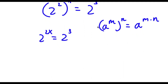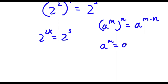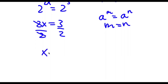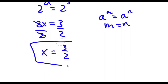Now if a to the power of m equals a to the power of n, then m equals n. So in this case 2x equals 3. To solve this I divide both sides by 2, so x equals 3 over 2. That is my answer.